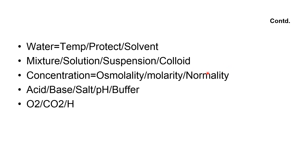Normality is a measure of concentration — the gram equivalent weight of a substance per liter of solution. The gram equivalent weight is the molecular mass divided by the number of replaceable hydrogen ions. For example, hydrochloric acid has a molecular weight of 36.5 and one replaceable hydrogen, so 36.5 ÷ 1 = 36.5. Thus, 36.5 grams per liter of solution is called one normal solution of hydrochloric acid.